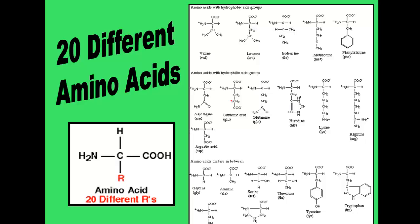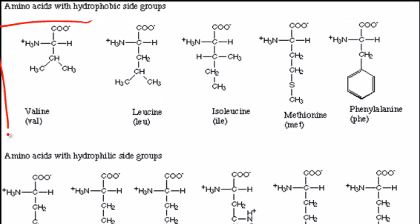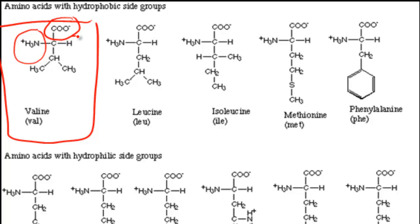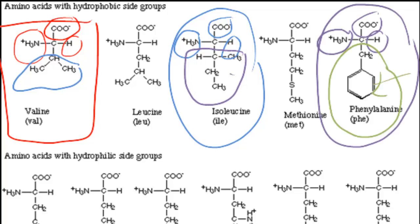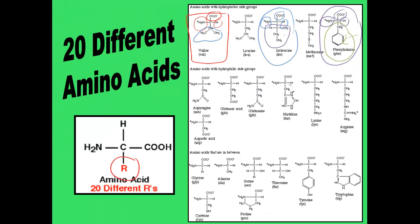Because there are 20 different R groups, that means there are 20 different amino acids. For example, valine has its amino group, carboxyl group, hydrogen group, and everything else is its R group. Isoleucine similarly has those three groups and a different R group. You don't need to memorize all of them — you just need to recognize these are all amino acids.